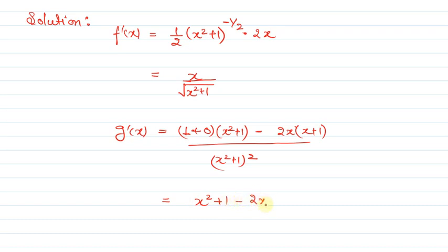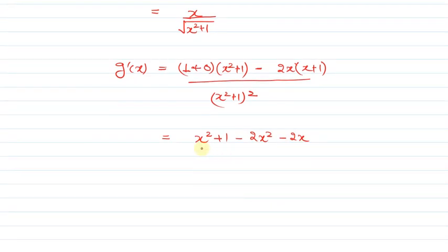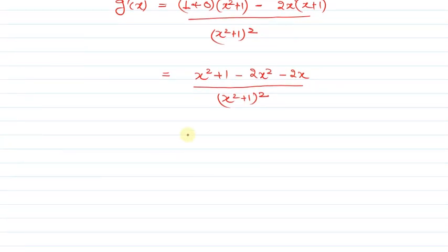Further solving this expression: x squared plus 1 minus 2x squared minus 2x, all divided by (x squared plus 1) squared. This simplifies to (1 minus x squared minus 2x) divided by (x squared plus 1) squared.